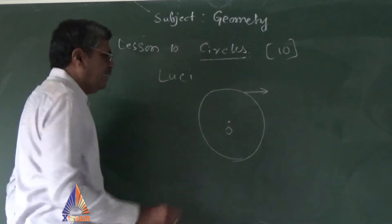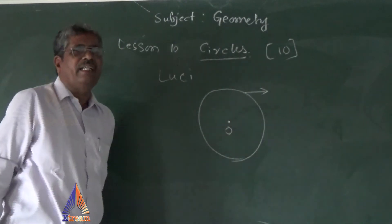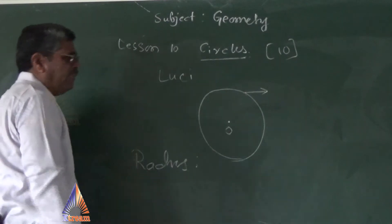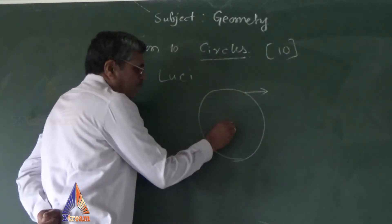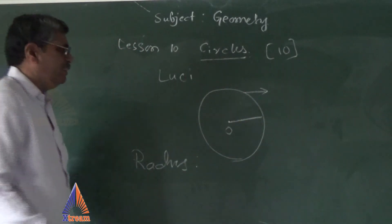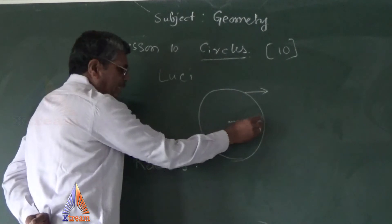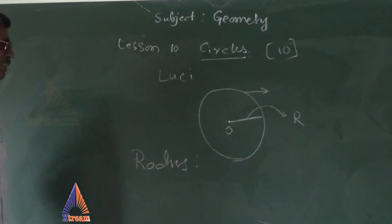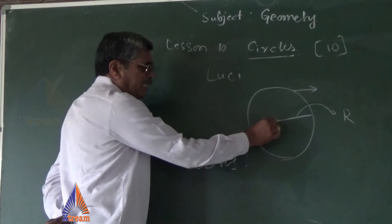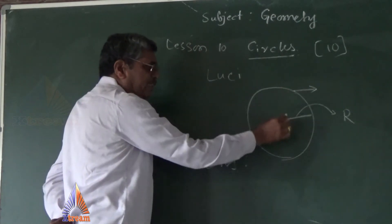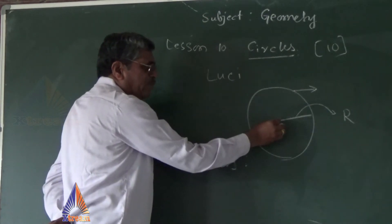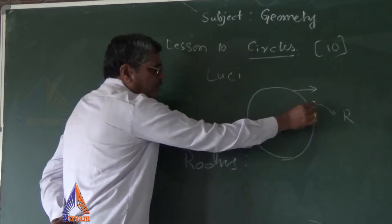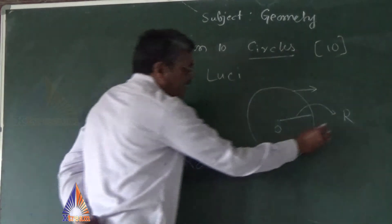Next definition: radius. The line segment from the center of the circle to the circumference of the circle is called the radius. This is denoted by the letter R. The distance between the center of a circle and the circumference is commonly called the radius, denoted by R.